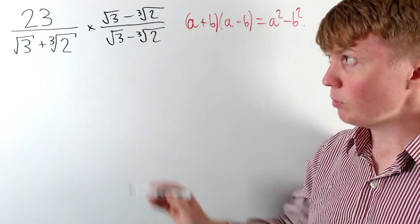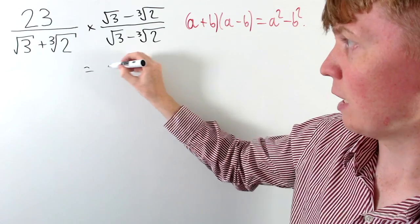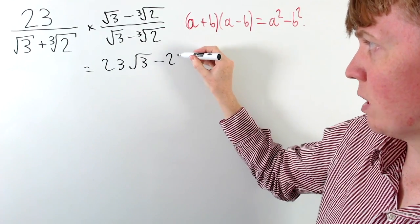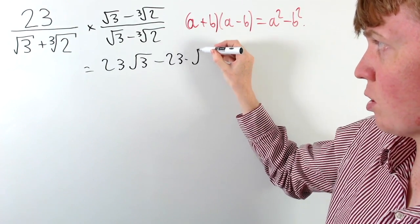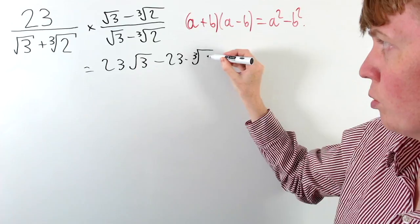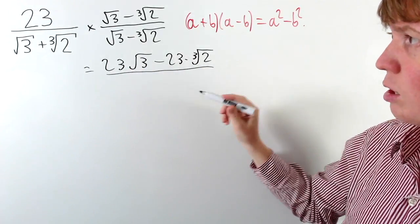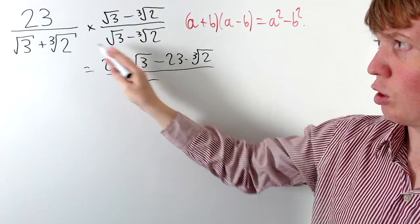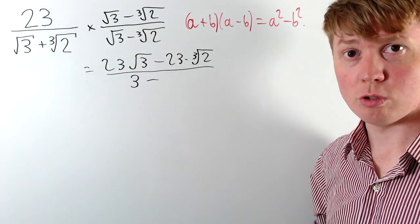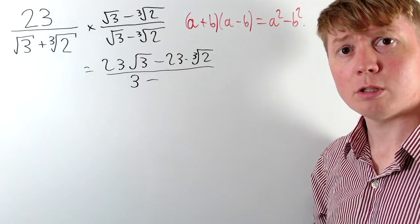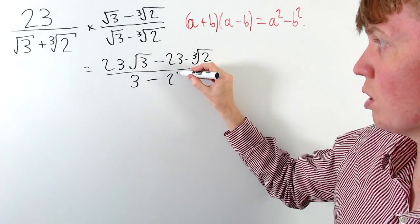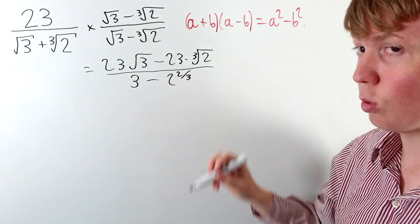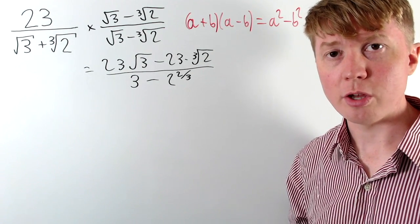When we carry out this multiplication we get 23 root 3 minus 23 times the cube root of 2. Our new denominator becomes root 3 squared, which is 3, minus the cube root of 2 squared, which I'll write as 2 to the power of 2 thirds — remember that the cube root of 2 is 2 to the power of 1 third.